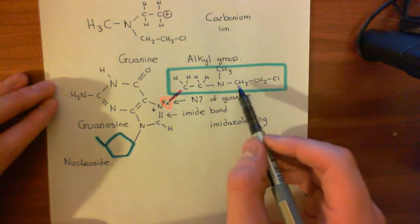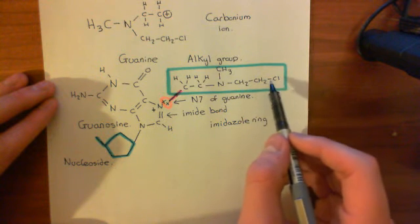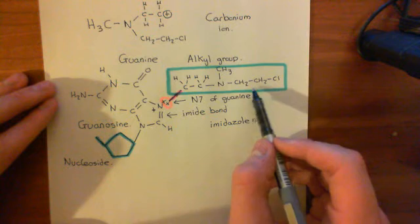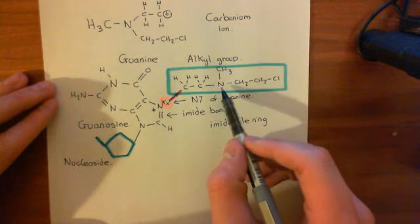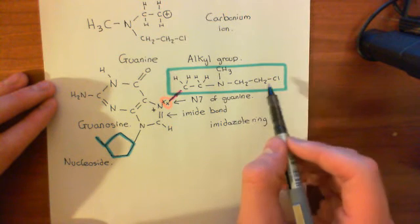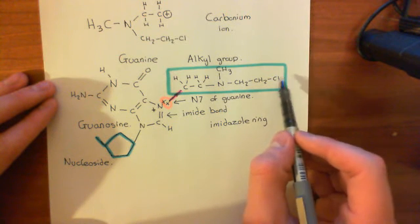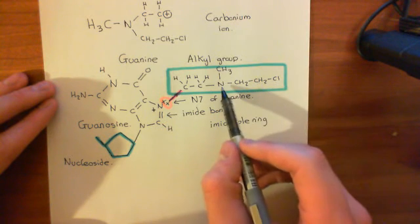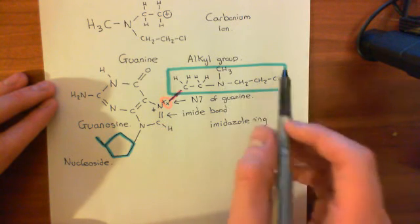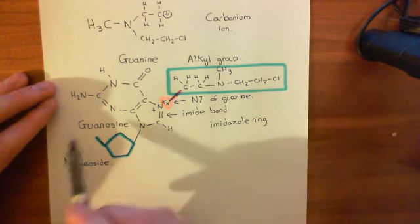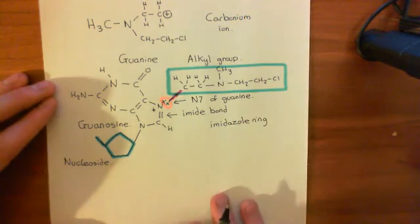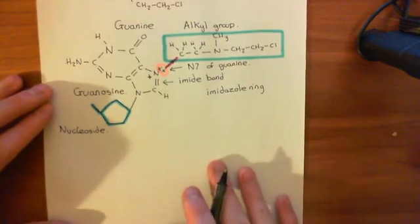Basically, what can happen is this carbon here can attack this nitrogen, and it will spit off the chloride in the process, so it will form an ammonium ion, and it's doing this whilst it's attached to the guanine organic base. So let's draw this.